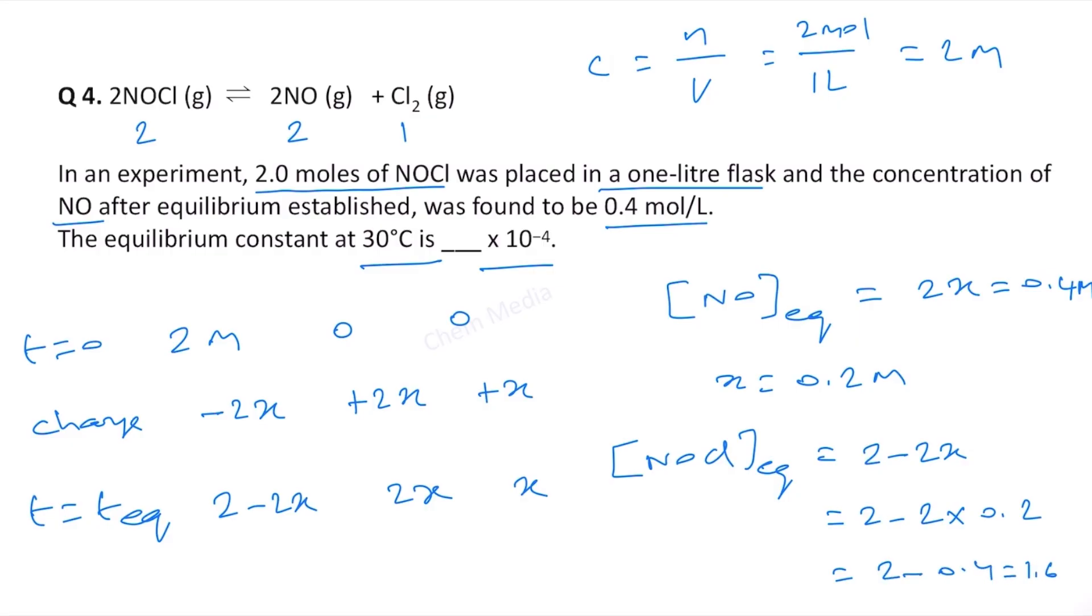And we know that equilibrium constant value Kc in this case is equal to concentration of NO square times concentration of Cl2 divided by concentration of NOCl square. We know all the values so 0.4 square times 0.2 divided by 1.6 whole square.